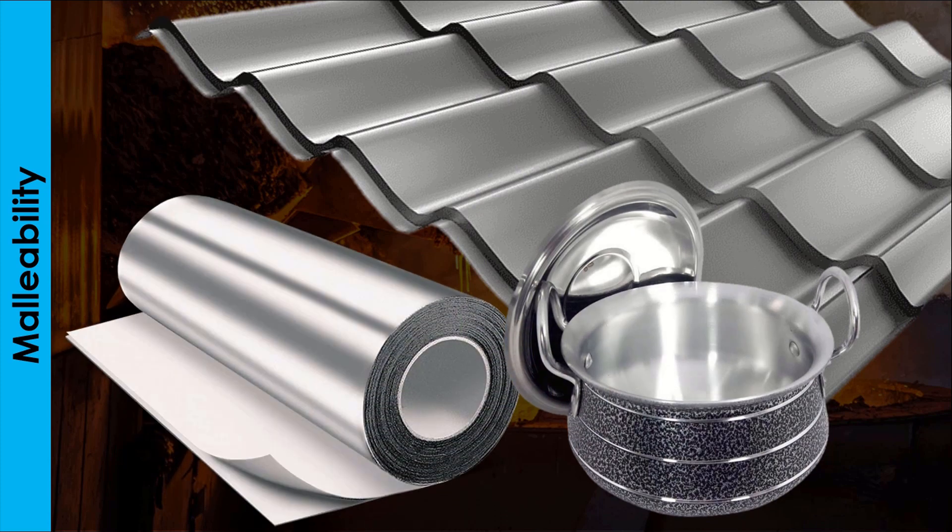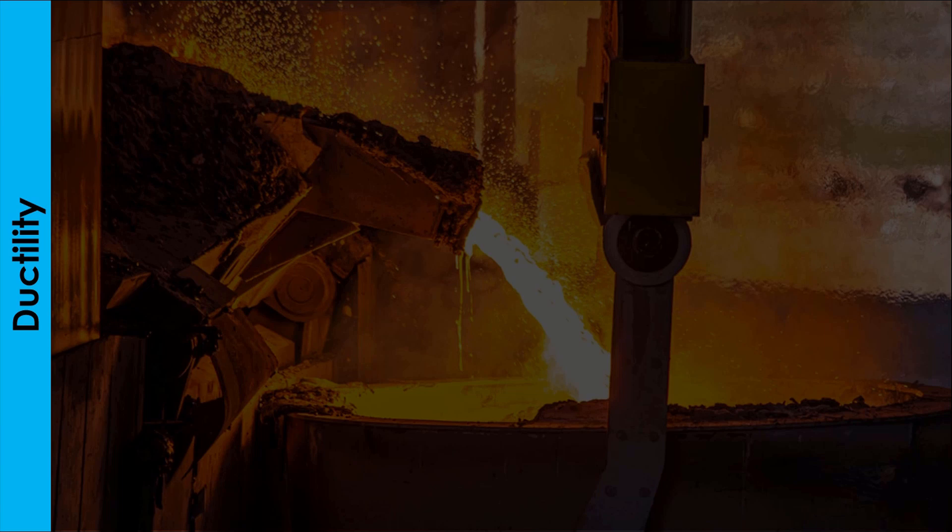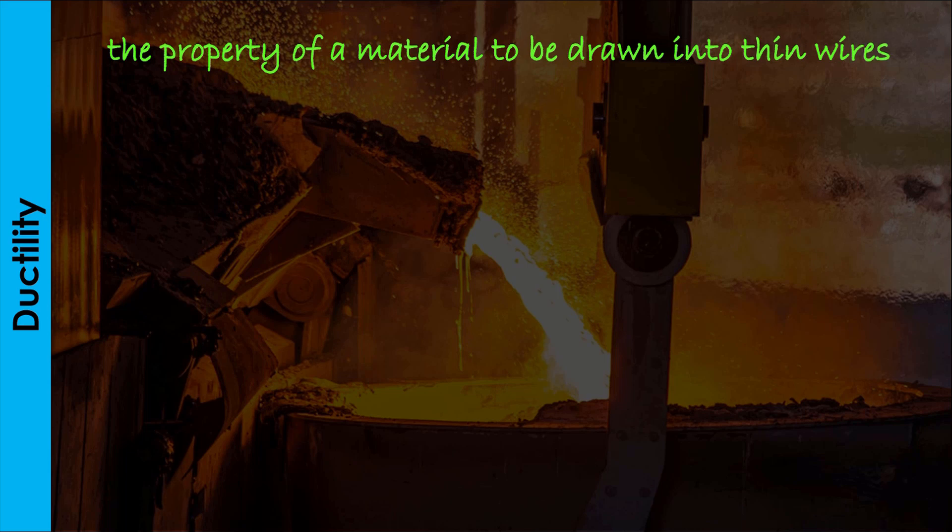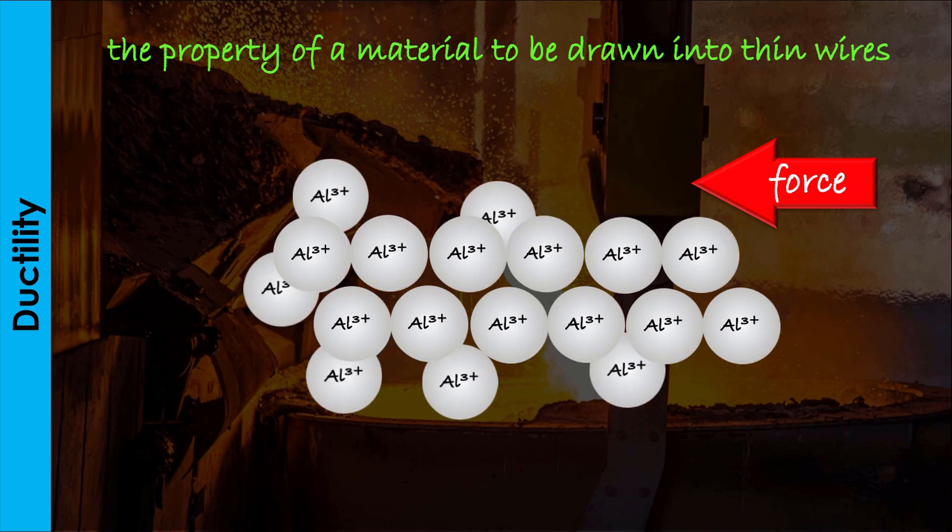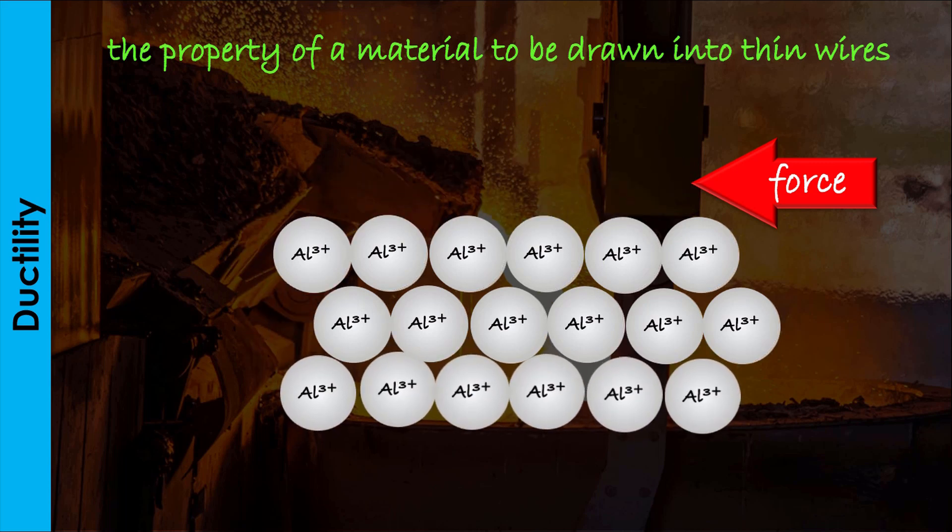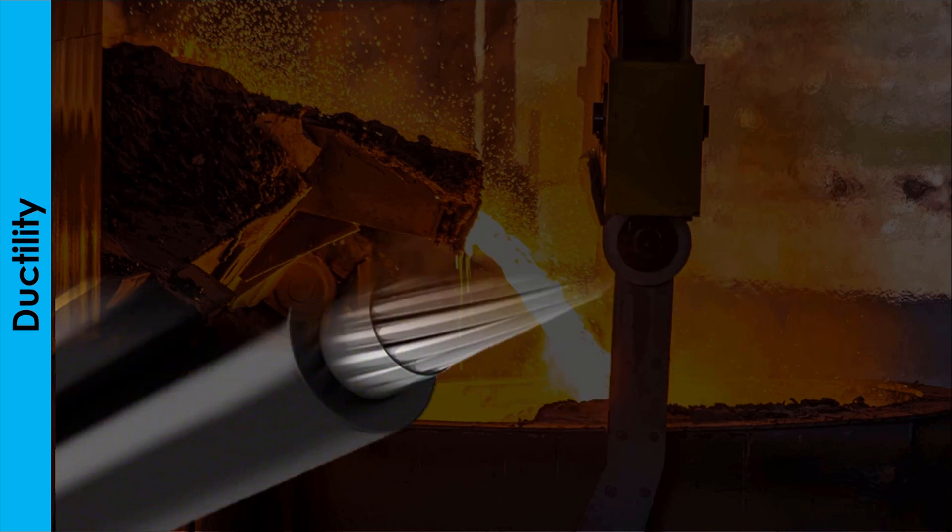Ductility is the ability of a metal to be drawn into thin wires. Just like malleability, it is attributed to the layers of the aluminum atoms sliding over one another when twisted without destroying the metallic lattice. This property explains why aluminum is used for making overhead cables.